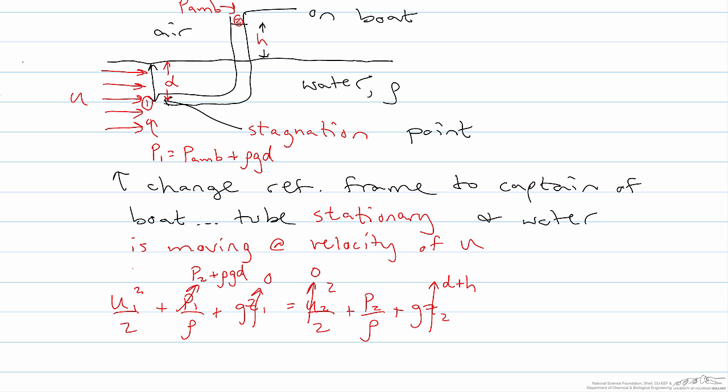u2 is zero because it's not moving at this point, and while it's not moving just to the right of point 1, the fluid is trying to move at a velocity of u just to the left of point 1, and so u1 is really the velocity of the boat, and so that's u.